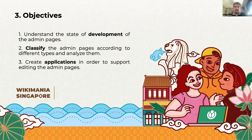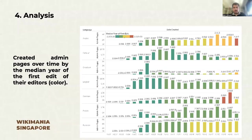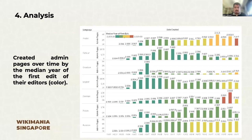So, let me show you an example — two quick analyses. In this graph, we see the number of admin pages created over the years, colored by the median year of the first edit of the editors who created them. It tells us about which generation of editors creates the admin pages. Here in green we see 2003, and in red we see 2011.